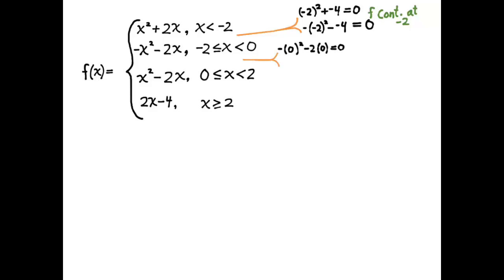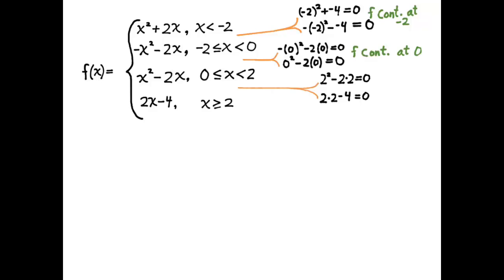We'll do the same analysis, substituting 0 into both negative x squared minus 2x and x squared minus 2x, and we see again that f approaches the same value from the left and the right — also 0 — and therefore f is continuous at 0. At the third junction point, f approaches 0 from both sides and therefore f is continuous at 2. It's continuous at all three junction points and the function pieces are all polynomials, which means f of x is continuous for all real numbers.